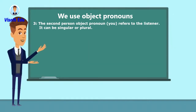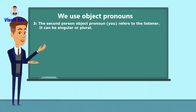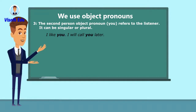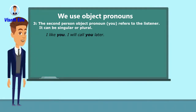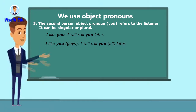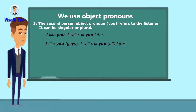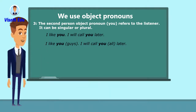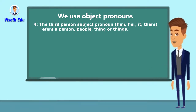The second person object pronoun is 'you' — it refers to the listener and can be singular or plural. For example: 'I like you,' 'I will call you later' — 'you' here is the second person singular objective pronoun. 'I like you guys,' 'I will call you all later' — 'you' here is the second person plural objective pronoun.